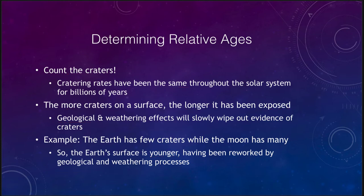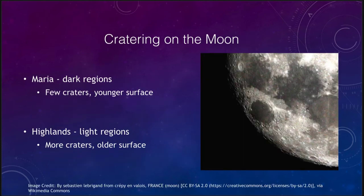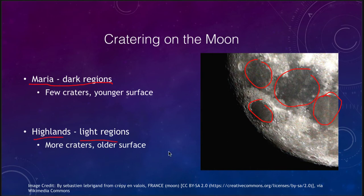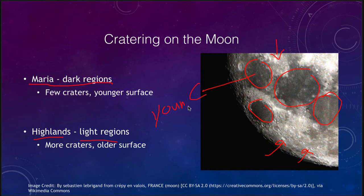Let's take a quick look at our moon. There are regions that have lots of craters and regions that have very few craters. The maria are the dark regions which have few craters and are a younger surface — you can see some of the maria here and here. These darker regions have fewer craters than the highland regions, which are the lighter-colored regions with far more craters. So we know that the maria are younger and the highlands are older regions.